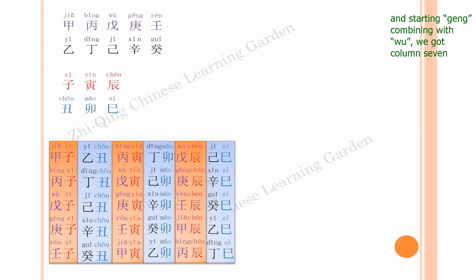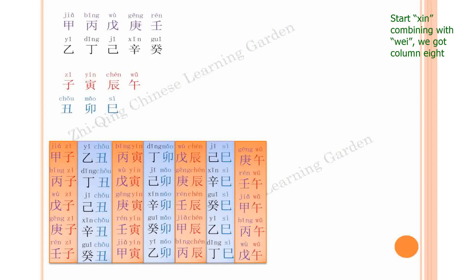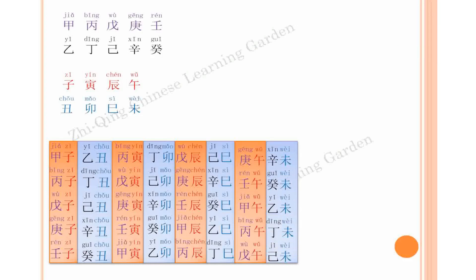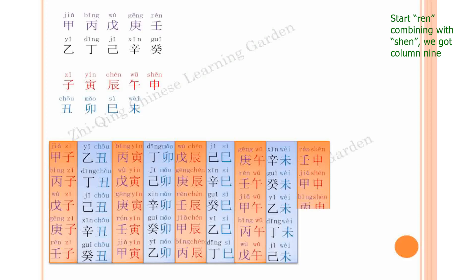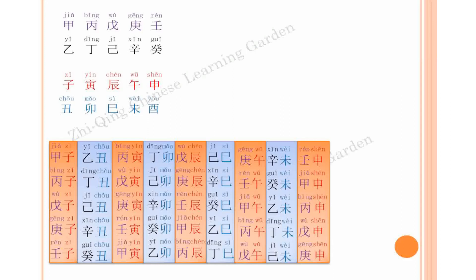Starting geng combining with wu, we get column 7: geng wu, ren wu, jia wu, bing wu, wu wu. Starting xin combining with wei, we get column 8: xin wei, gui wei, yi wei, ding wei, ji wei. Starting ren combining with shen, we get column 9: ren shen, jia shen, bing shen, wu shen, geng shen. Starting gui combining with you, we get column 10: gui you, yi you, ding you, ji you, xin you.